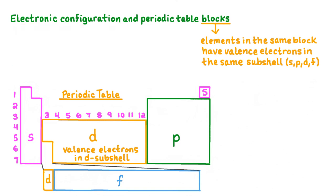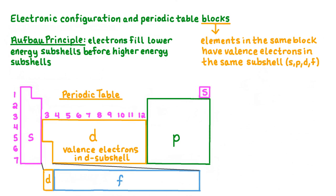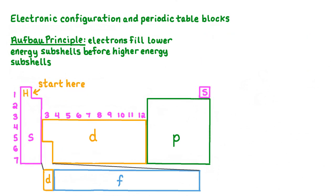The order in which electrons fill up subshells of an atom is based on increasing energy. According to the Aufbau principle, electrons fill the lowest energy subshells before they fill higher energy subshells. The electron configuration of an atom can be written by moving period by period across the periodic table, starting with hydrogen, until we reach the element that we want to write the electron configuration for. Let's write an electron configuration for the first D-block element found in period 4, which is scandium.